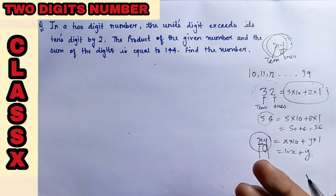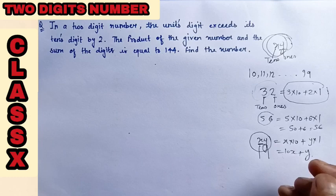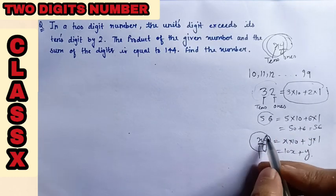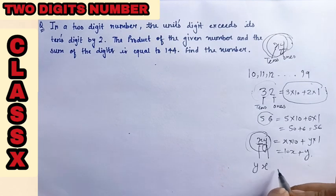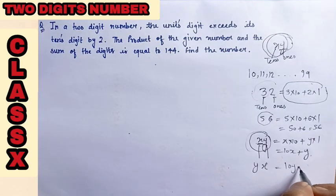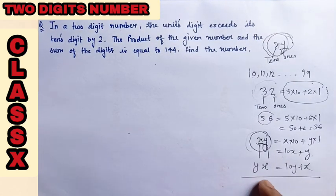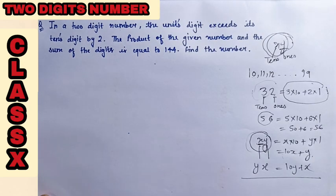It also comes in exams: on rearranging the digits, if you rearrange it, it will shuffle out. y will come here, x will come here, so the number will become 10y plus x. You should also keep this situation in mind.